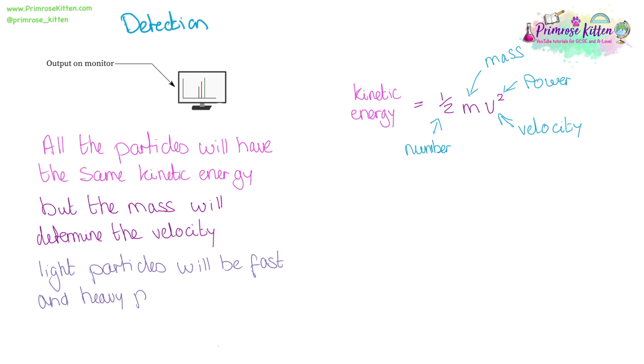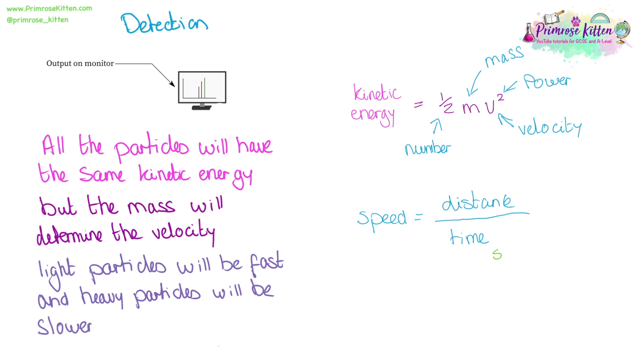Light particles will be fast, and heavy particles will be slower. We now need another equation. We know that speed equals distance over time. We have our kinetic energy measured in joules, our time measured in seconds, mass is measured in kilograms, velocity is measured in meters per second, distance is measured in meters, and speed is measured in meters per second.